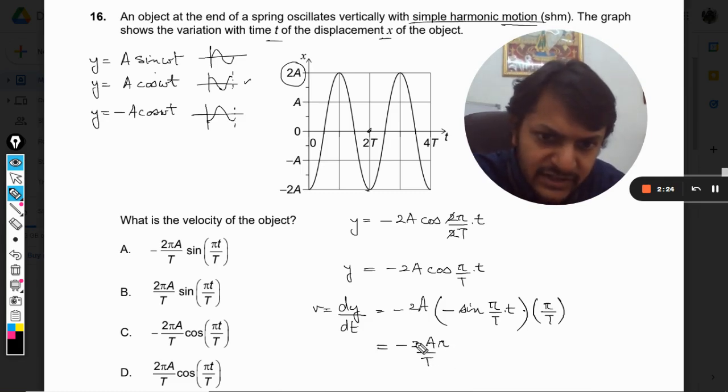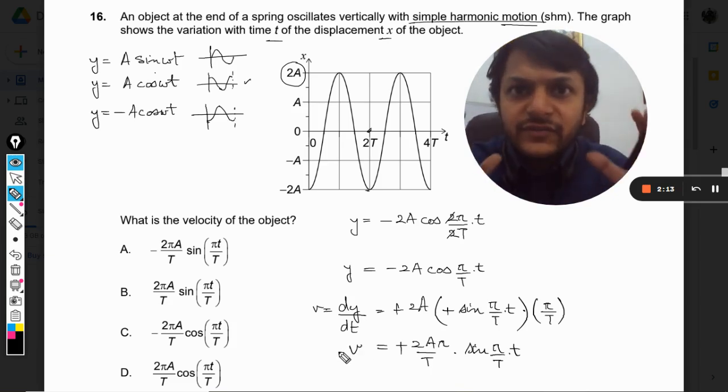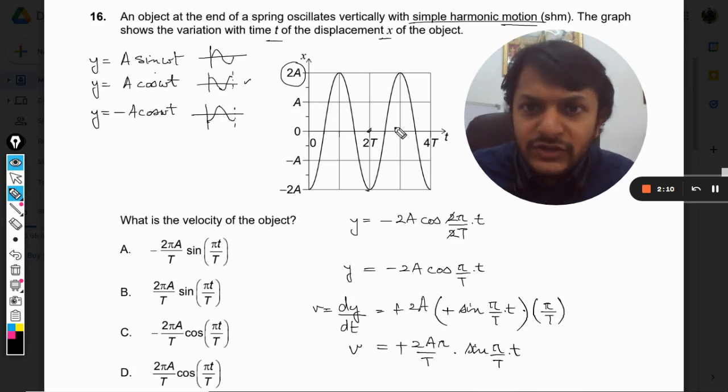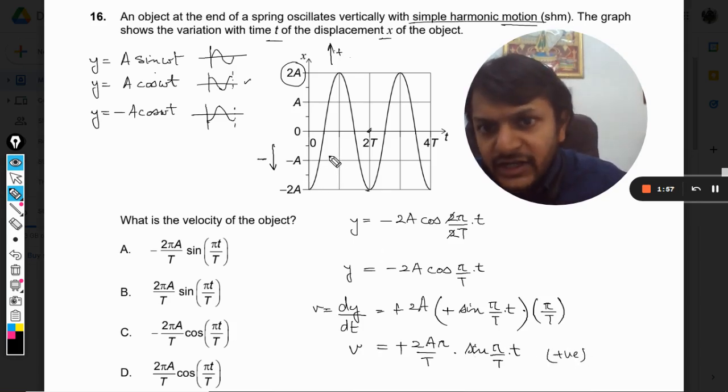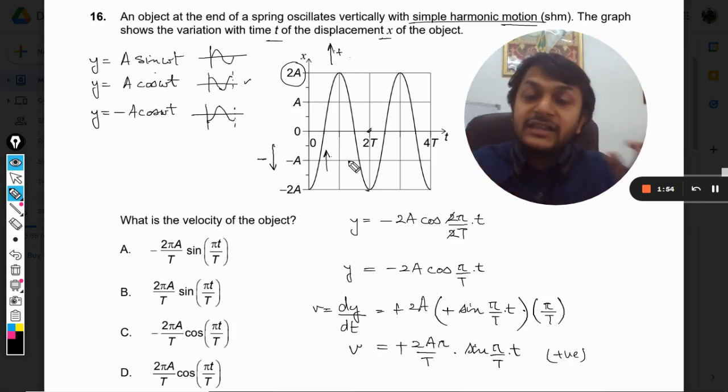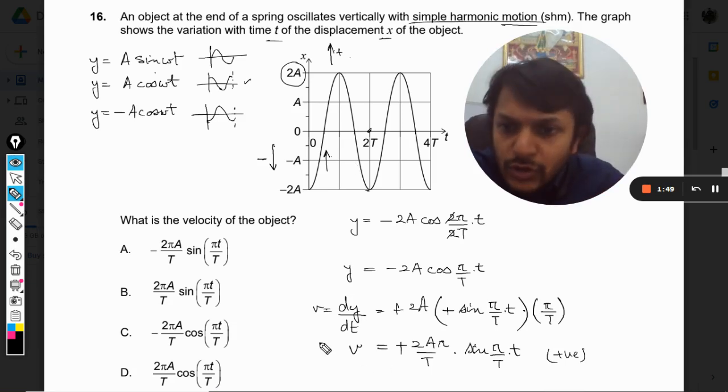So our answer must be minus 2A π divided by T, and minus and minus gets cancelled, so it will be positive into sine of π by capital T into small t. This is the equation for the velocity of the particle. Because of this graph we can say that the upward direction is taken as positive and the downward direction is taken as negative. So the velocity here is positive, it means at this point the velocity will be upwards, and that is absolutely true. So out of these options, I would say B is the correct answer.